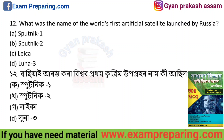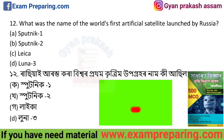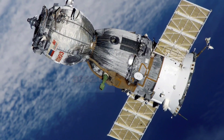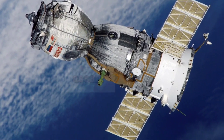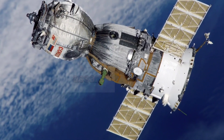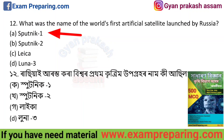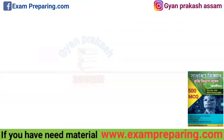What was the name of the world's first artificial satellite launched by Russia? The answer is Sputnik 1. Sputnik 1 was Russia's first satellite.